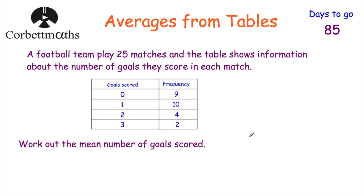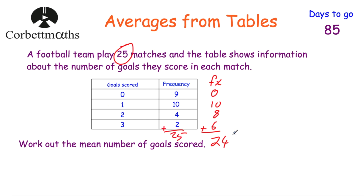Now work out the mean number of goals scored. Adding the fx column: nine matches with 0 goals gives 0; ten matches with 1 goal gives 10; four matches with 2 goals gives 8; two matches with 3 goals gives 6. Grand total: 0 + 10 + 8 + 6 = 24 goals. We're told there were 25 matches, so the mean is 24 ÷ 25 = 0.96. The mean number of goals scored is 0.96.